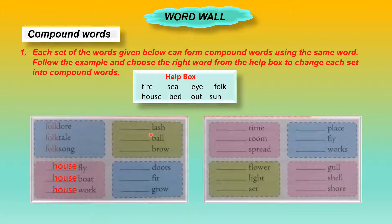Let's see the next one — lash, ball, and brow. We can take the word 'eye.' The compound words will be eyelash, eyeball, and eyebrow.